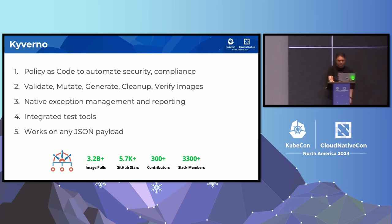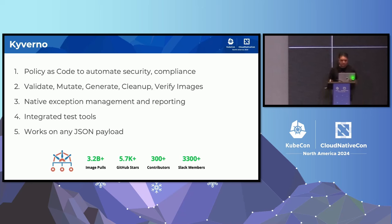Kyverno is a policy-as-code solution which started out being Kubernetes-native but has since expanded to outside of Kubernetes as well. You can apply Kyverno policies in your pipelines on any JSON payload. Kyverno can validate, but also mutate, generate, as well as clean up resources. Kyverno has also built-in integrations into image verification, which lets you do things like verify SBOMs or verify how your container images are built to ensure they were done according to your standards.